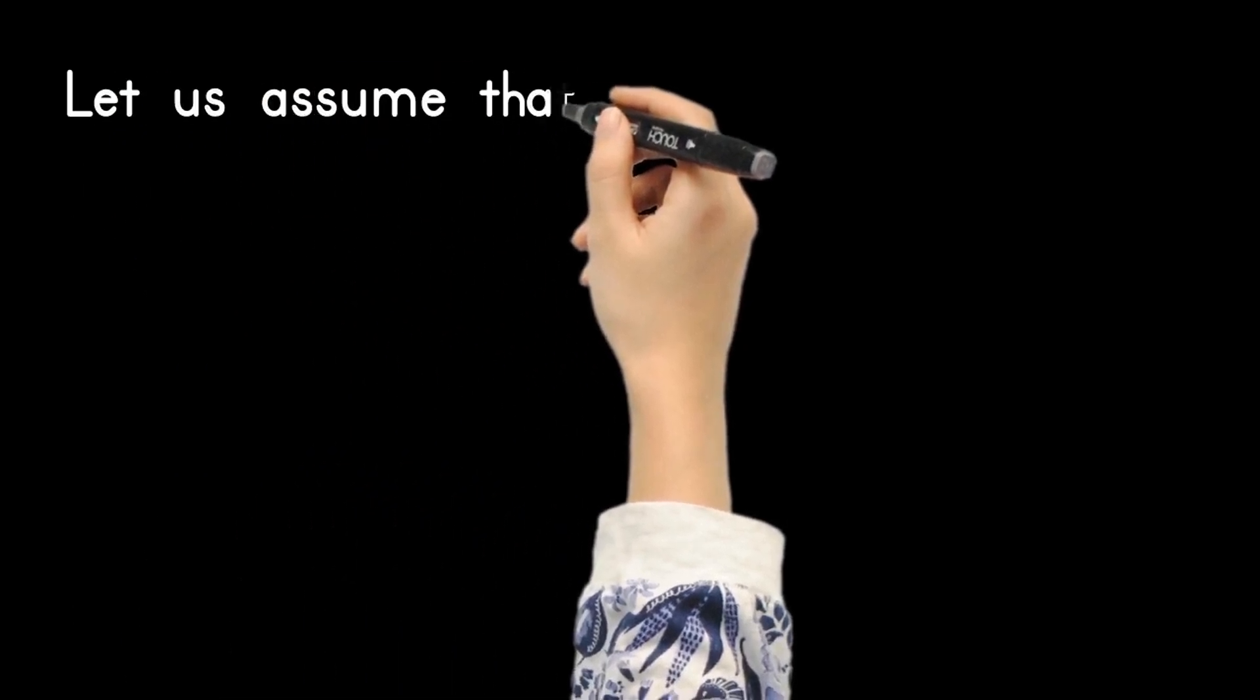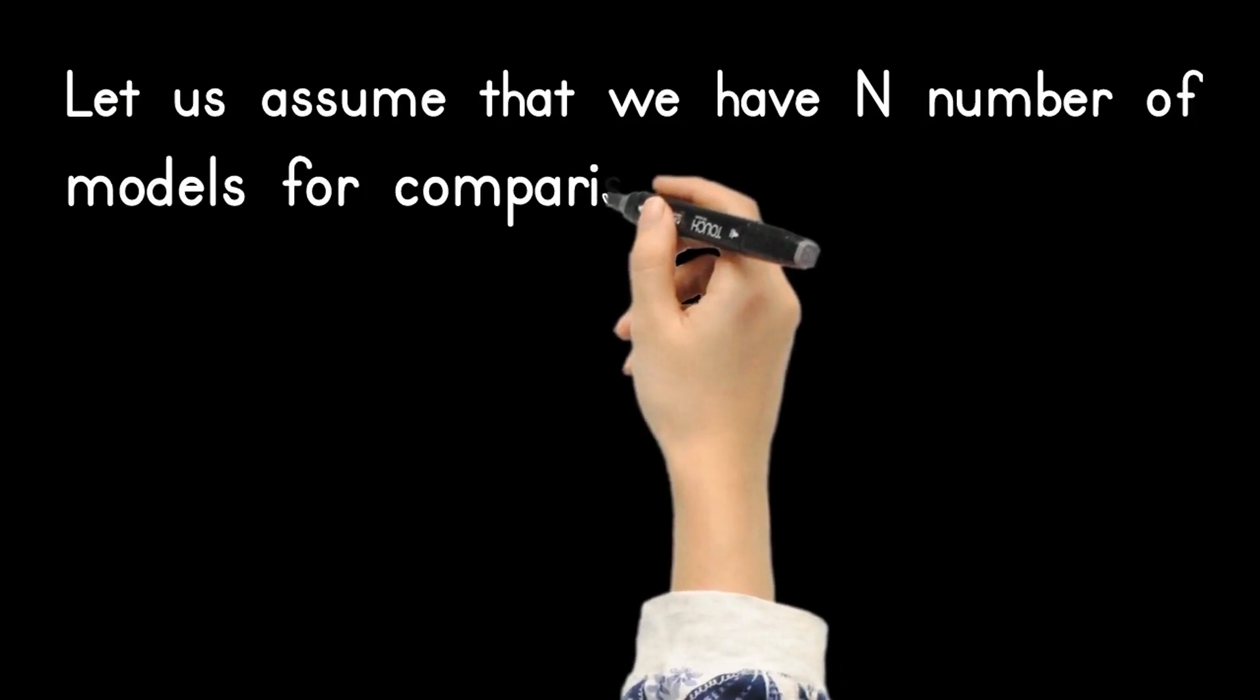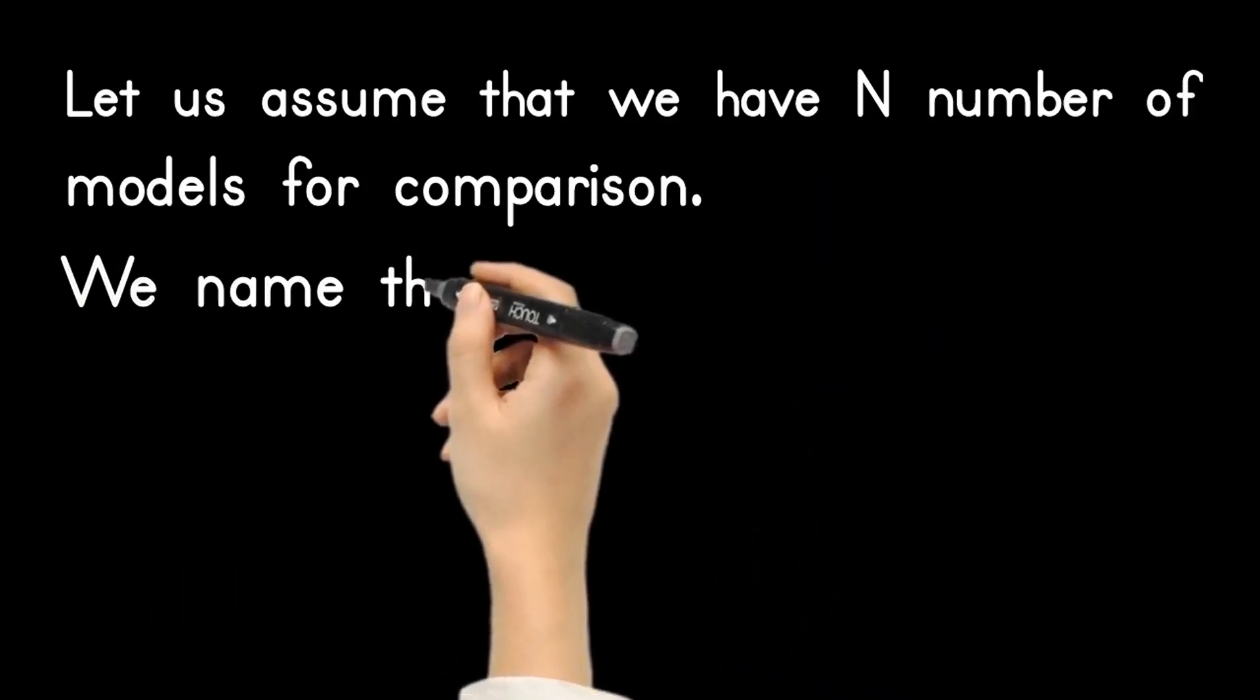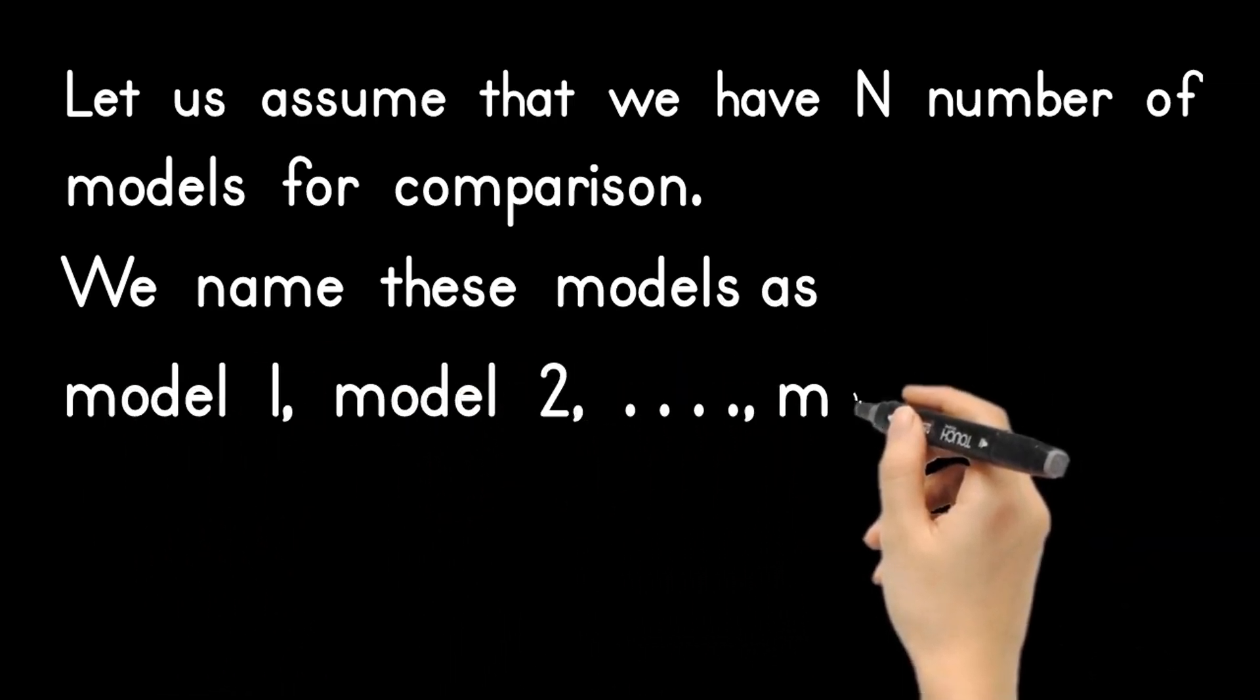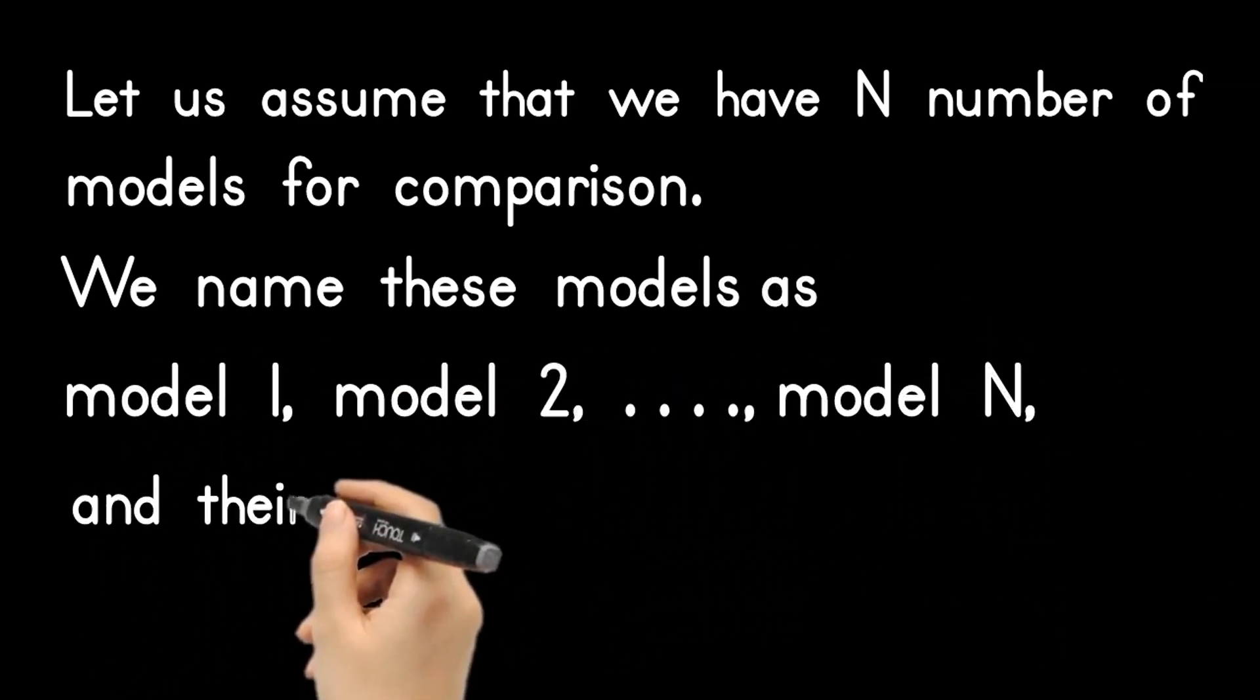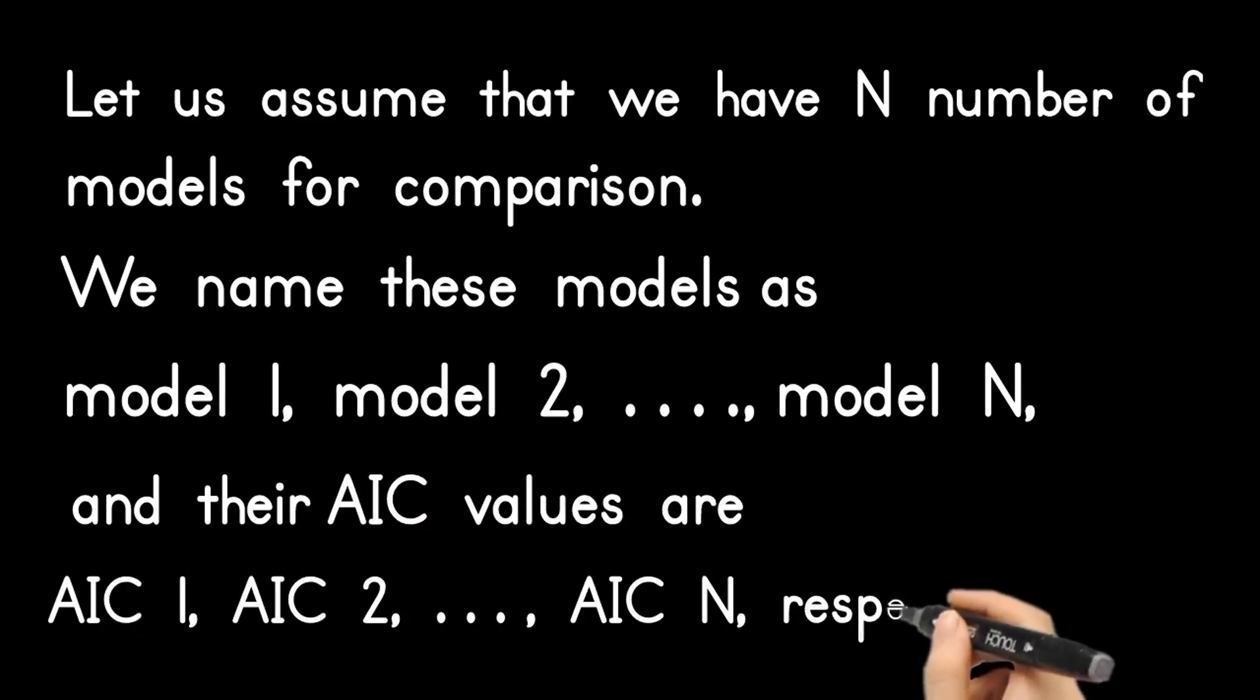Let us assume that we have N number of models for comparison. We name these models as model 1, model 2, up to model N, and their AIC values are AIC 1, AIC 2, up to AIC N, respectively.